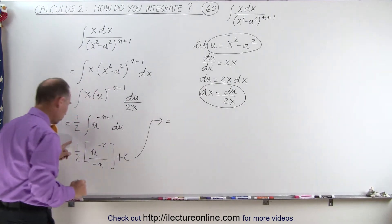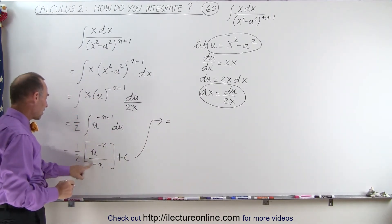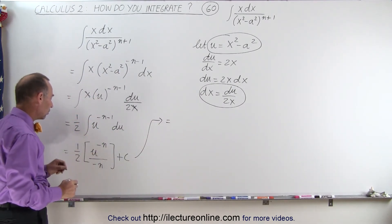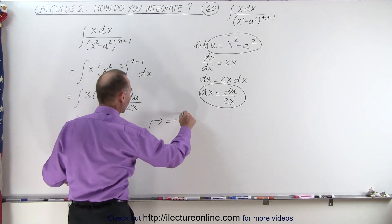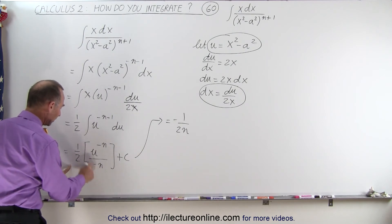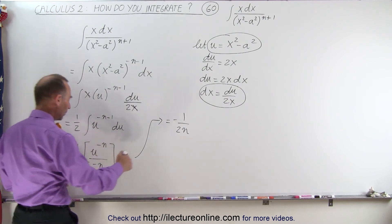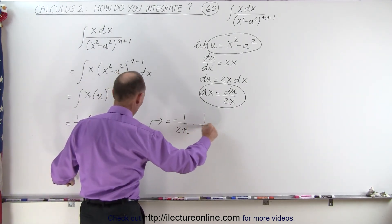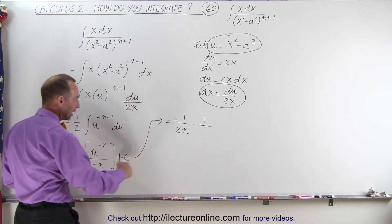So we simplify that a little bit. That will be equal to, well, we have a negative here, so that can come up here, this can go to the denominator, so this becomes minus 1 over 2n. So I take the n, bring it out here, the negative up here, and that becomes times 1 over u to the n power.